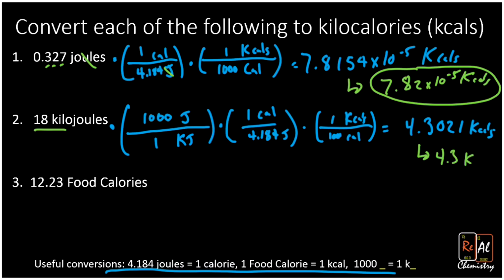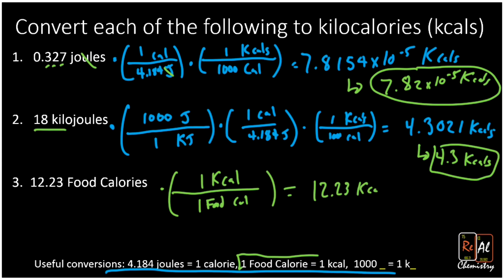Okay, last conversion - it's our easiest one. We want to go from food calories to kilocalories. Well, remember, one food calorie just is a kilocalorie, so I could write the conversion factor if I want to: one food calorie is equal to one kcal. All right, and then I'm just going to get out 12.23 kcals. So those are just the same - no change there. And I have four sig figs here and I have four sig figs there, so I'm all set.